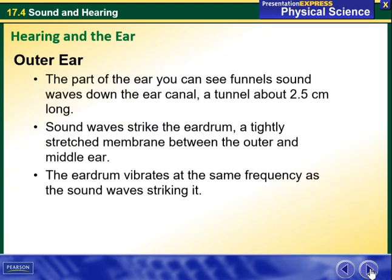The outer ear — the part of the ear you can see — funnels sound waves down the ear canal, a tunnel about 2.5 cm long. Sound waves strike the eardrum, a tightly stretched membrane between the outer and middle ear. The eardrum vibrates at the same frequency as the sound waves striking it.